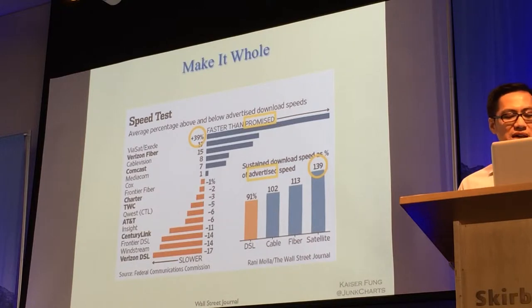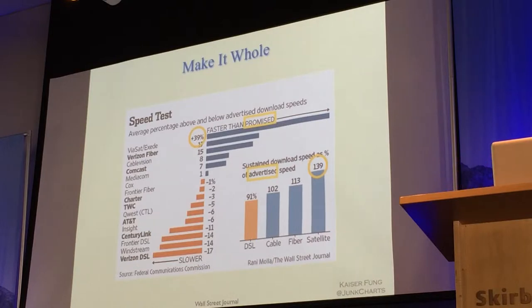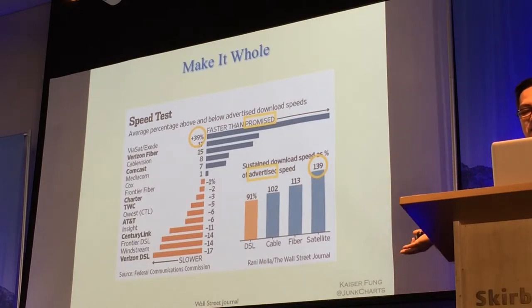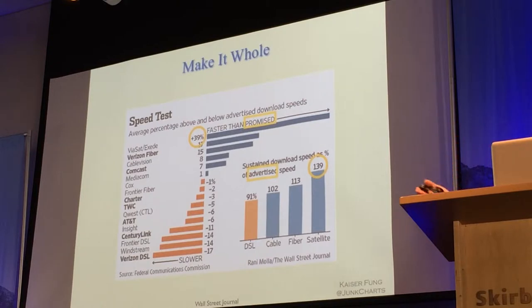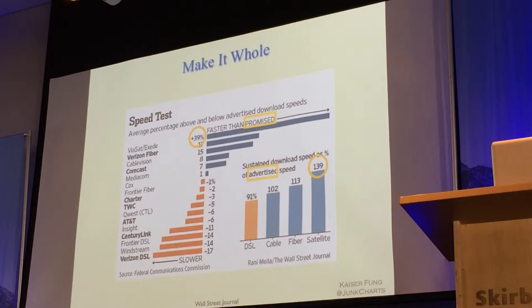Another thing that is always good is to make your chart whole, meaning that you don't want to have dangling pieces that contradict each other. When I made this chart, I made the two charts become one, and when you make two charts become one, you're forced to have the same axes, one scale, and only one label — so that usually is better. That's not to say you should never have tables of charts, but in this particular case, putting them together reduces the chance of things being contrary.